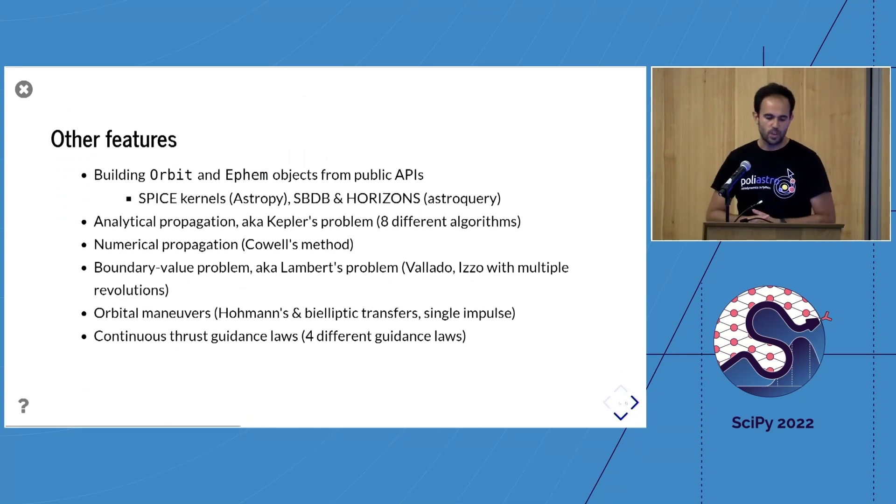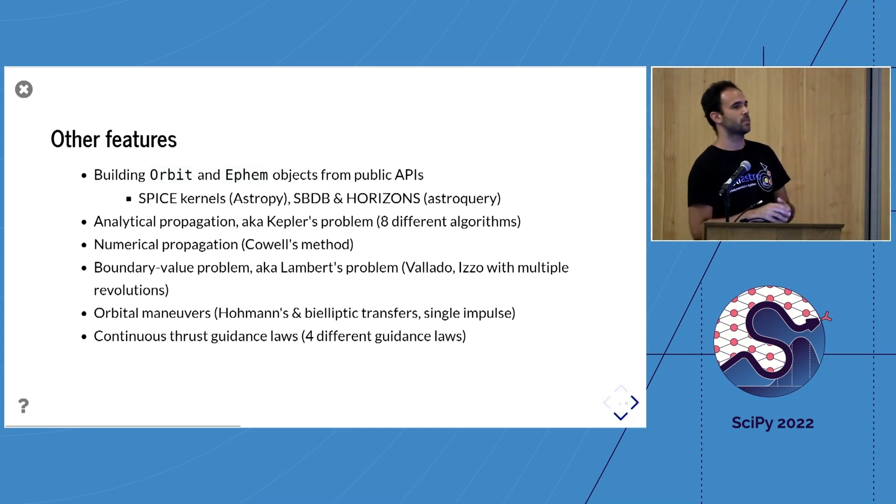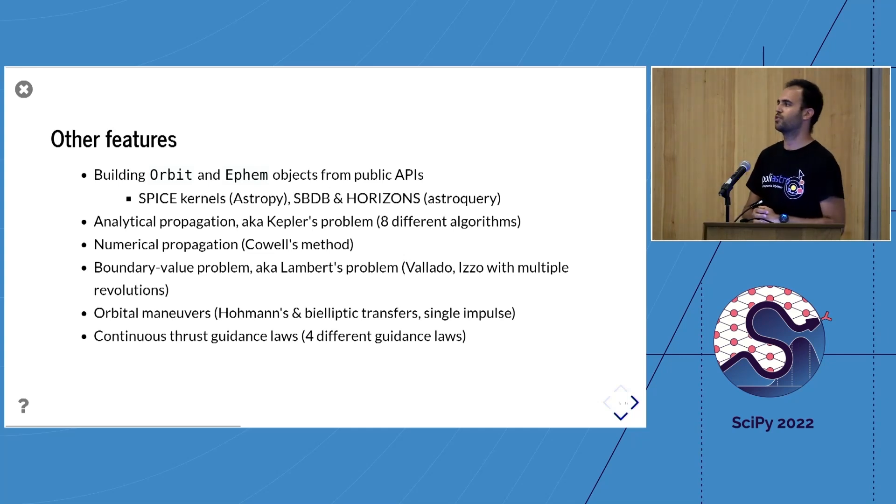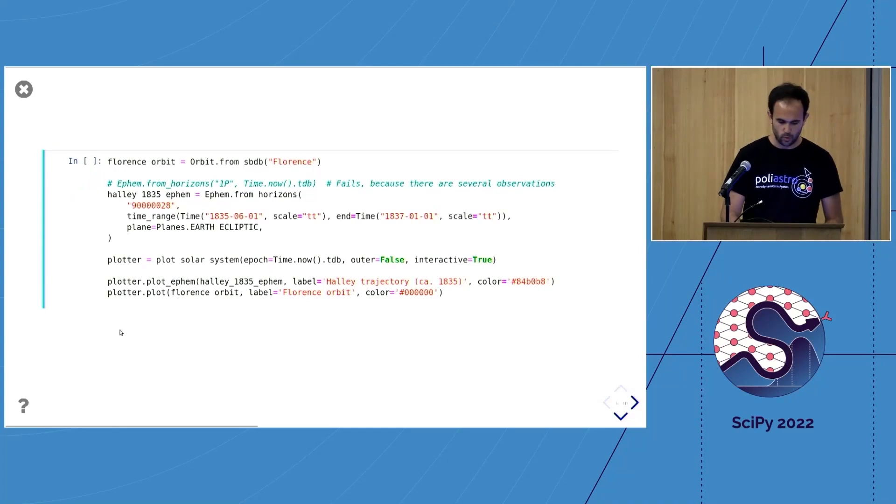This is a very quick view of what PolyAstro can do, but there's many more things. There are eight different algorithms for propagation, most of them implemented by Jorge, the other half of the PolyAstro core team. There's numerical propagation, the resolution of the boundary value problem—from a starting and final position, how is the arc described between the two—and many more things.